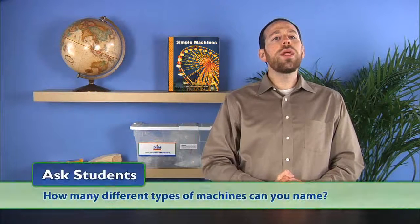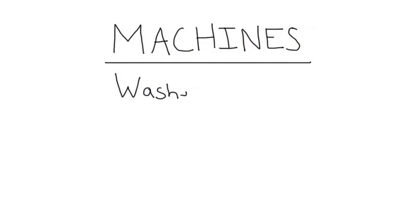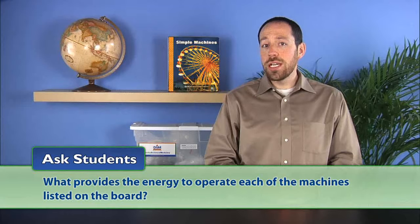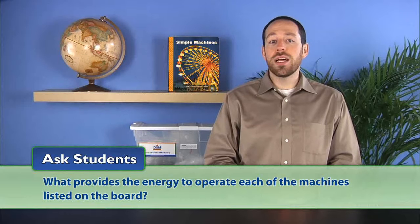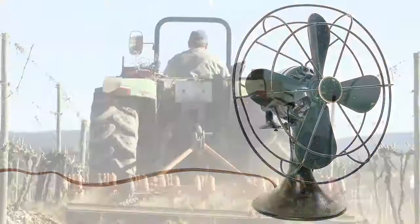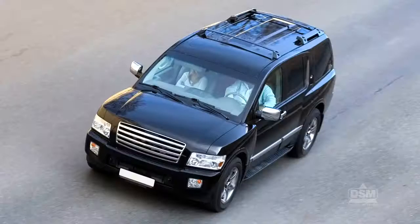Ask students, how many different types of machines can you name? List student responses. Then ask, what provides the energy to operate each of the machines listed on the board? Students may respond that some machines are powered by electricity, diesel fuel, or gasoline, and so on.